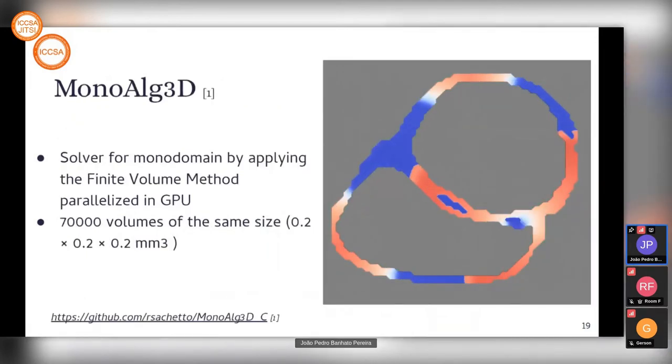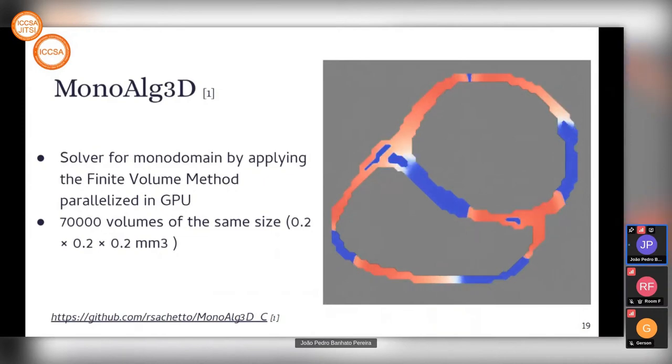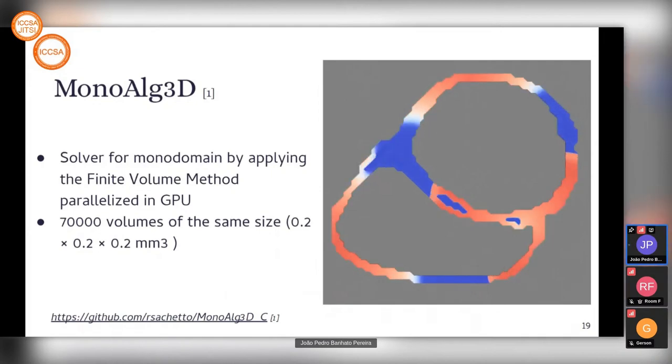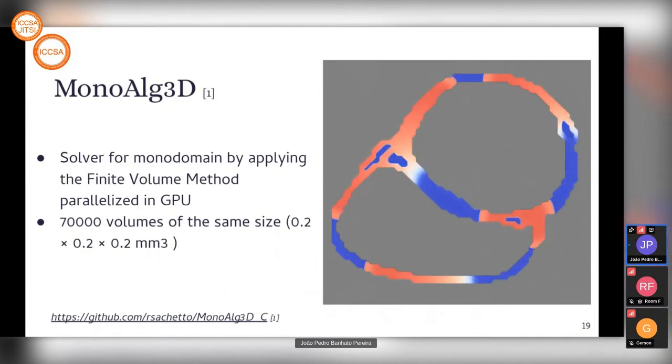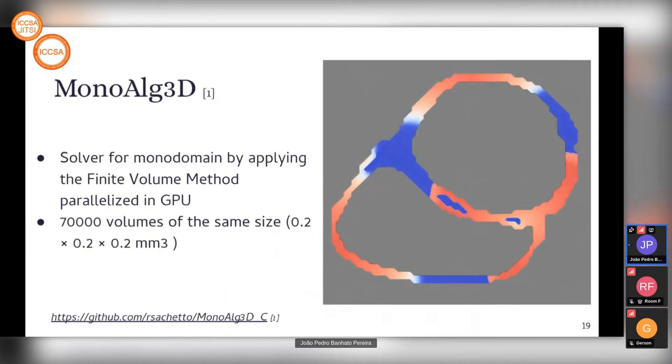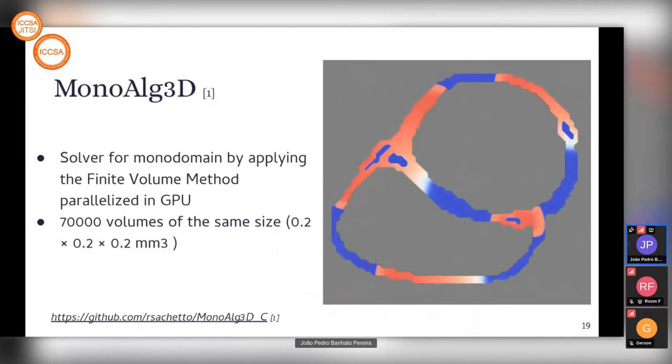We chose MonoAlg3D as the software to carry out computational simulations. It's a solver for the monodomain that applies the finite volume method parallelized in GPU. We used 70,000 volumes of the same size, 0.2 mm cubed. The monodomain equation requires a solution of linear equations for each time step solved using the conjugate gradient iterative method, implemented in the MonoAlg3D simulator.